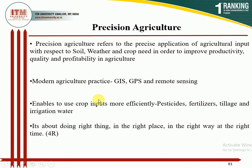The main practices used in precision agriculture are GIS, that is the Geographical Information System; GPS, that is the Global Positioning System; and third is remote sensing. Precision agriculture includes the application of pesticide, fertilizer, tillage, or irrigation water in a precise manner so that more yield can be produced with less input. Precision agriculture is basically called the 4R concept — the right thing, in the right place, in the right way, and at the right time.